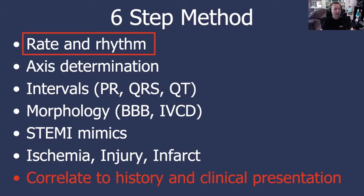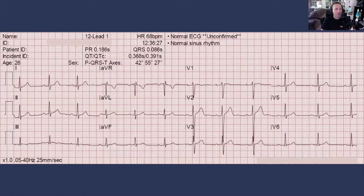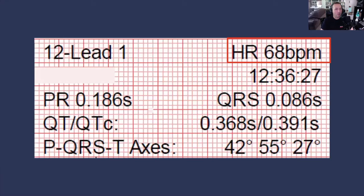So let's go ahead and start with rate and rhythm. We're going to use a normal 12-lead ECG today. This is a 26-year-old male. You'll notice at the top of this ECG we have some computerized measurements. The computer is measuring the heart rate at 68 beats per minute. Normal sinus rhythm, by convention, is 60 to 100 beats a minute, so that is a normal heart rate. But we always want to confirm things with our own eyes.